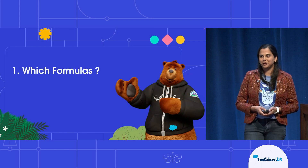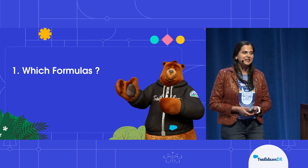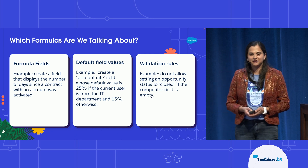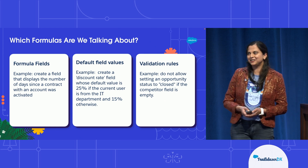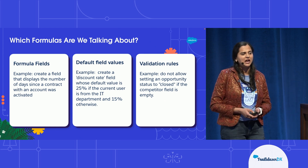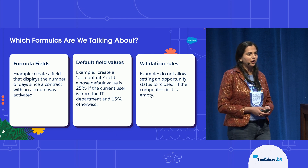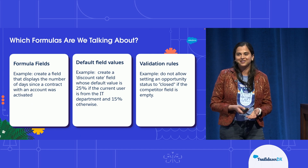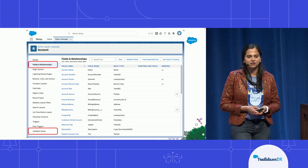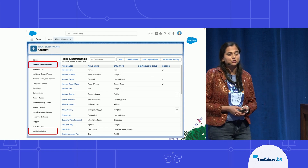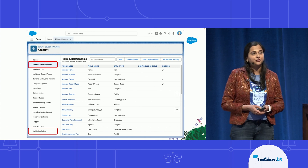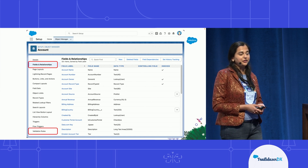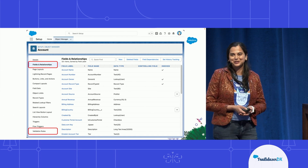Which formulas are we talking about when we're talking about simplifying? It's three kinds: formula fields, default field values, and validation rules. I'm sure you're all familiar with all three — they're used by so many admins almost all day every day. For all three, you'll be able to access them via Object Manager. Formula fields and default field values are accessed through Fields and Relationships, and validation rules have their own section.